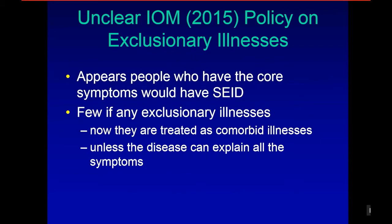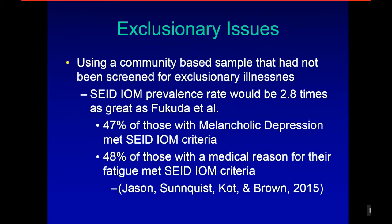It's also unclear with the IOM policy on exclusionary illnesses. It appears people who have the core symptoms would have SEID, with few if any exclusionary illnesses — they're now treated as comorbid illnesses unless the disease can explain all the symptoms. Using a community-based sample not screened for exclusionary illnesses, we estimate the SEID prevalence rate would be 2.8 times greater than Fukuda, because 47% of those with melancholic depression and 48% of those with a medical reason for their fatigue met SEID IOM criteria.